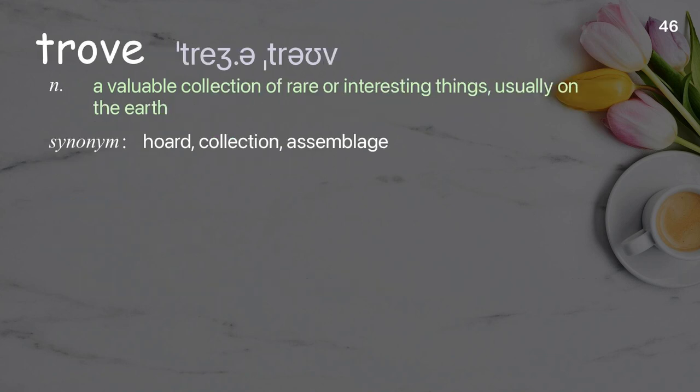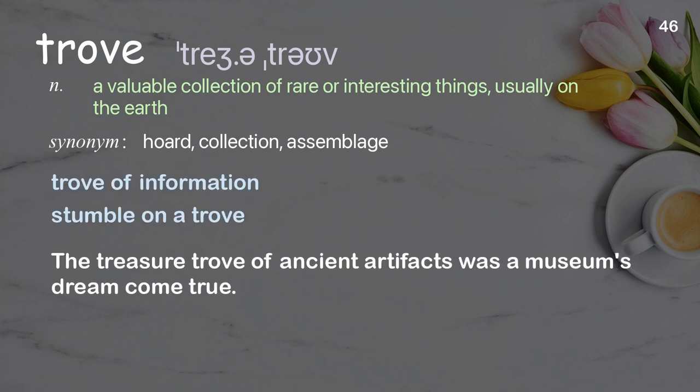Trove: A valuable collection of rare or interesting things, usually on the earth. Examples: Trove of information. Stumble on a trove. The treasure trove of ancient artifacts was a museum's dream come true.